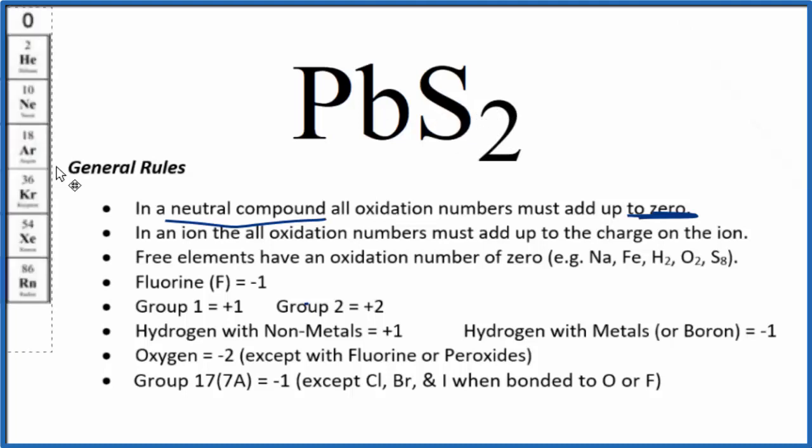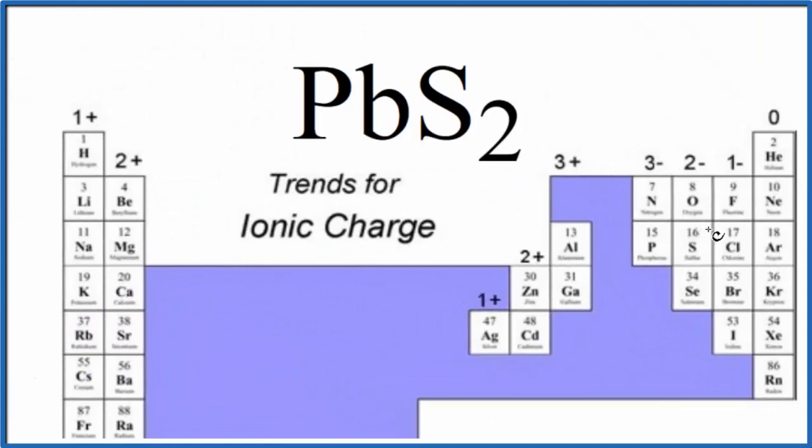So let's look at the periodic table. We find sulfur here, that has a 2 minus ionic charge. So we can say that the oxidation state on each sulfur here is minus 2.